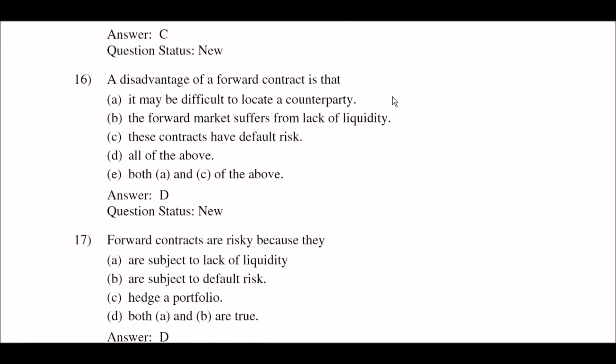Next question: a disadvantage of a forward contract is that — option A: it may be difficult to locate a counterparty; option B: the forward market suffers from lack of liquidity; option C: these contracts have default risk; option D: all of the above; option E: both A and C of the above. The right answer is option D: all of the above. So A, B, and C are all right options.